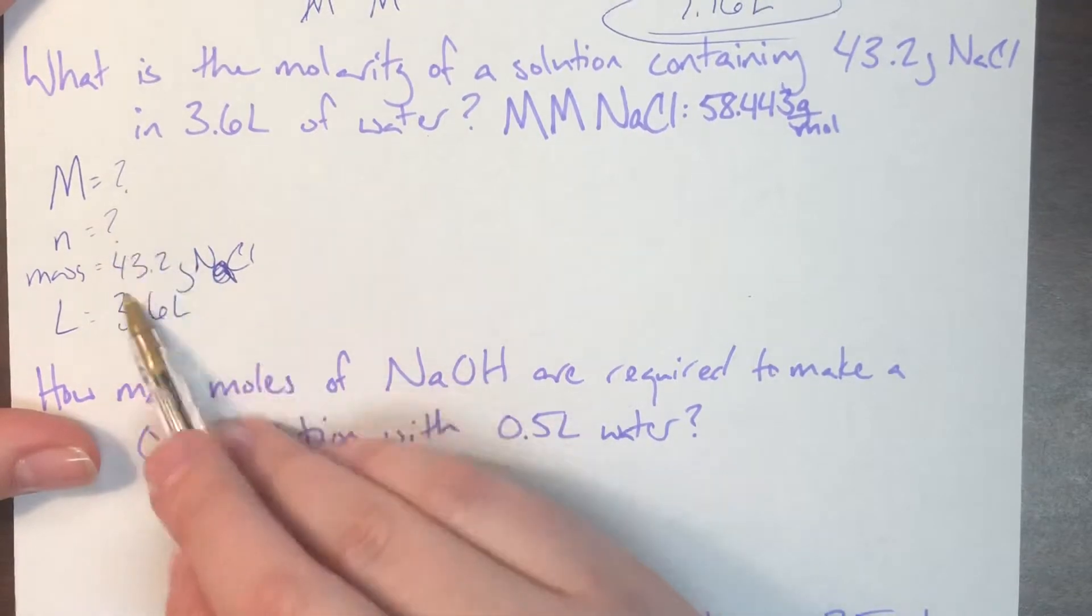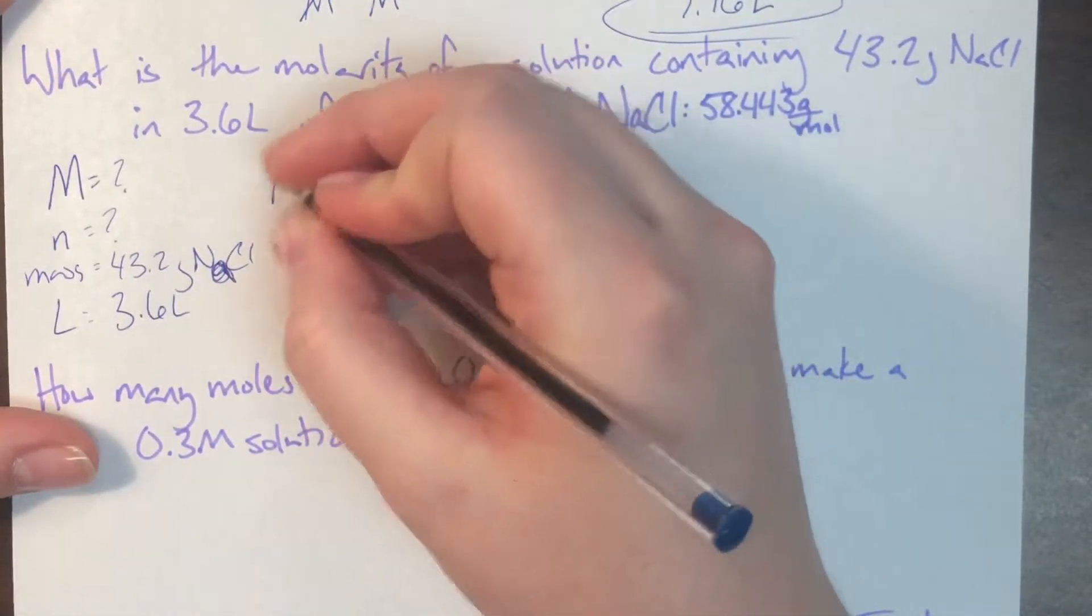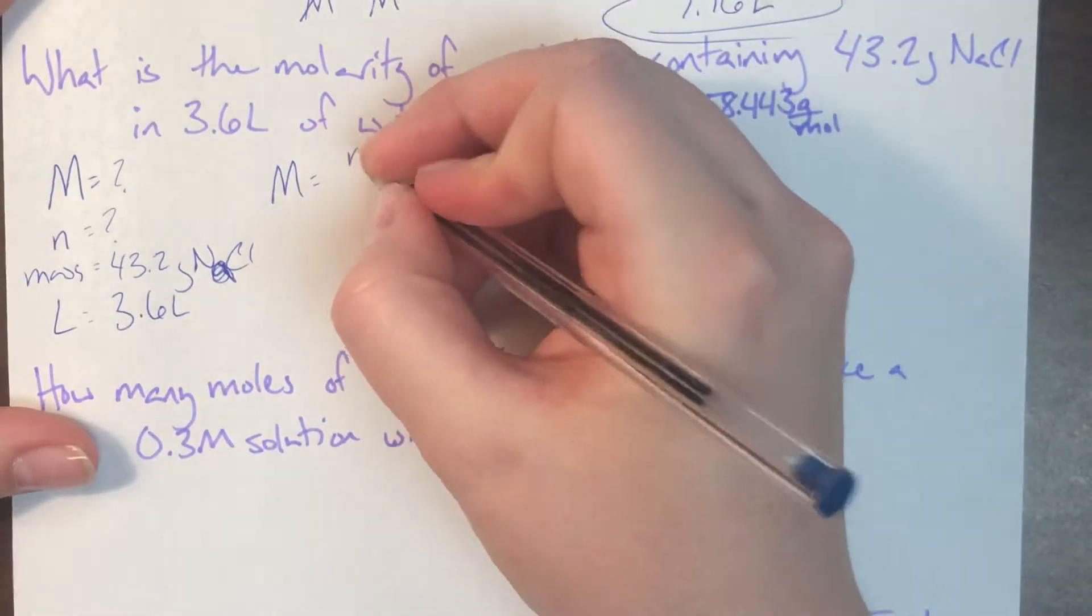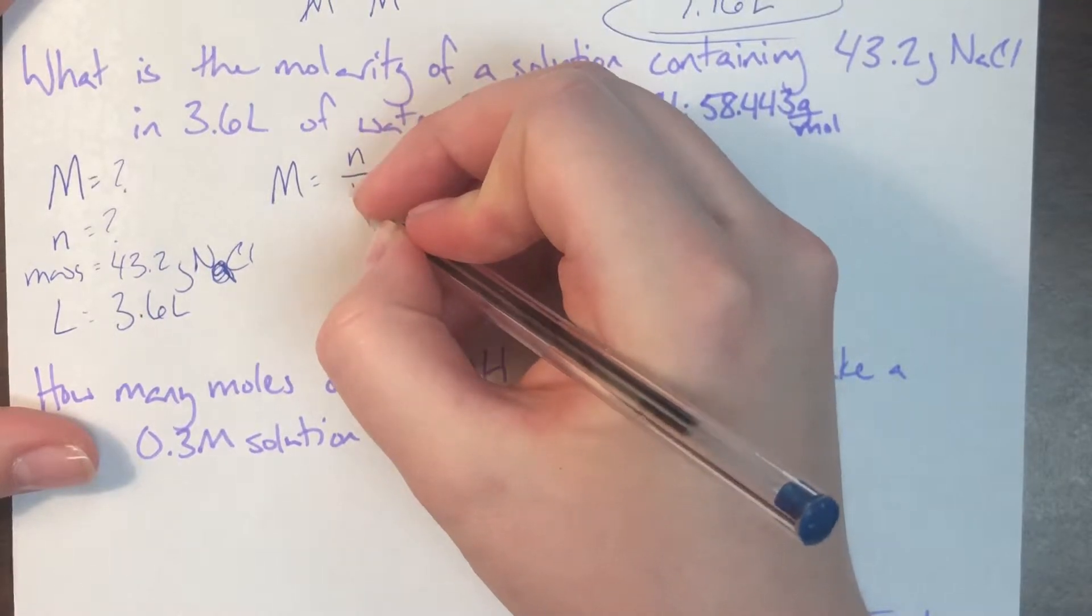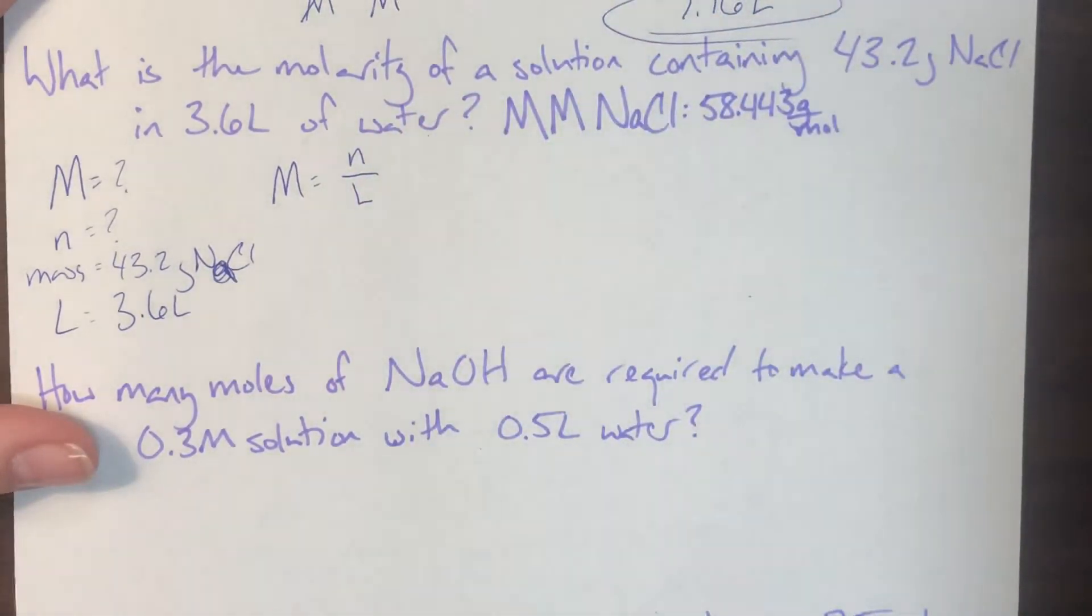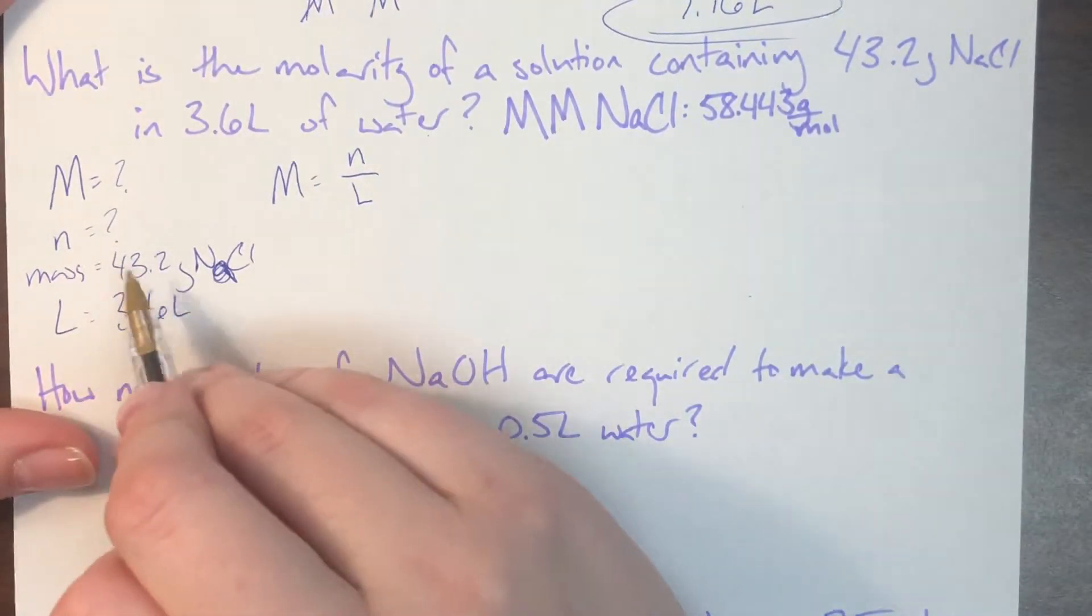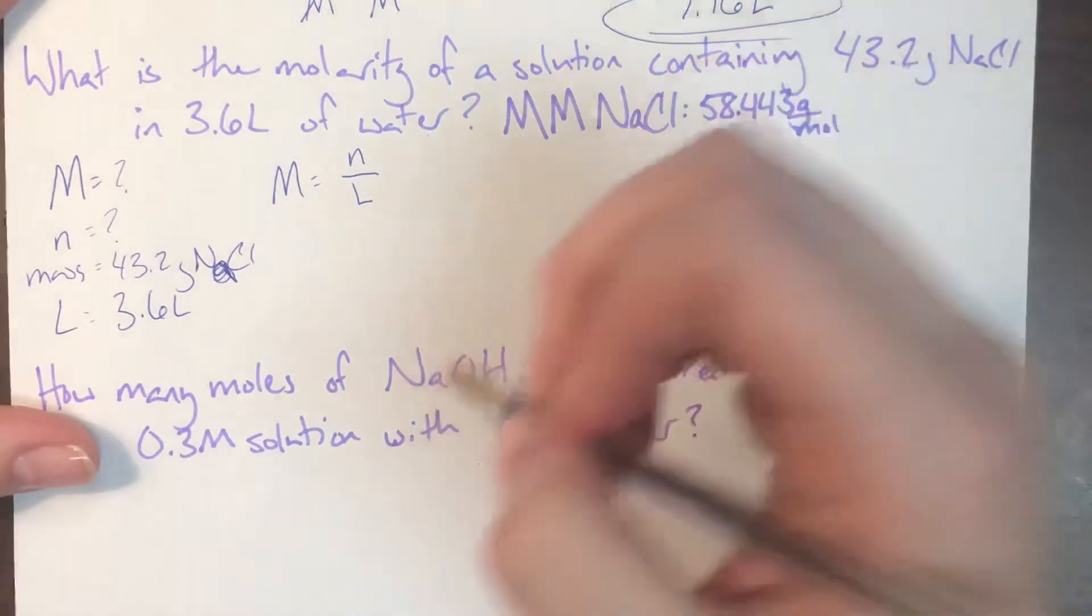And I know that I do not have everything that I need, because my initial equation is always going to be my molarity is equal to my moles of solute divided by liters of solvent. And I don't have an N yet. I have a mass, though, and mass can be converted into moles.